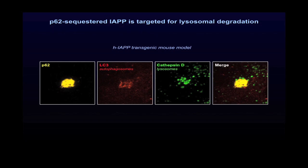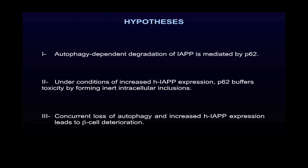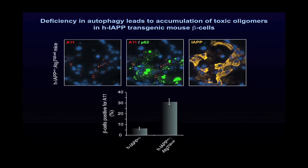Interestingly, these inclusions were surrounded by the autophagy machinery involving autophagosomes in red and lysosomes in green for degradation. So what would be the consequences of a deficiency in autophagy? We thus hypothesized that concurrent loss of autophagy and increased human IAPP expression leads to beta cell deterioration and diabetes. To test this hypothesis, we generated mice deficient for autophagy in beta cells with increased expression of human IAPP. By immunostaining, we detected an accumulation of toxic oligomers in beta cells of mice deficient in autophagy.